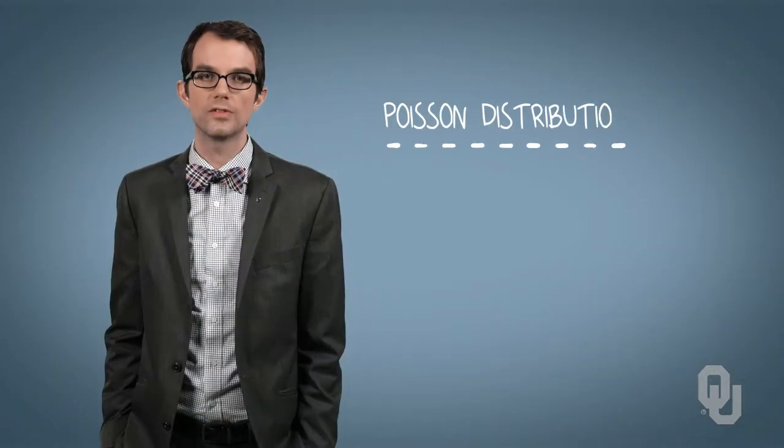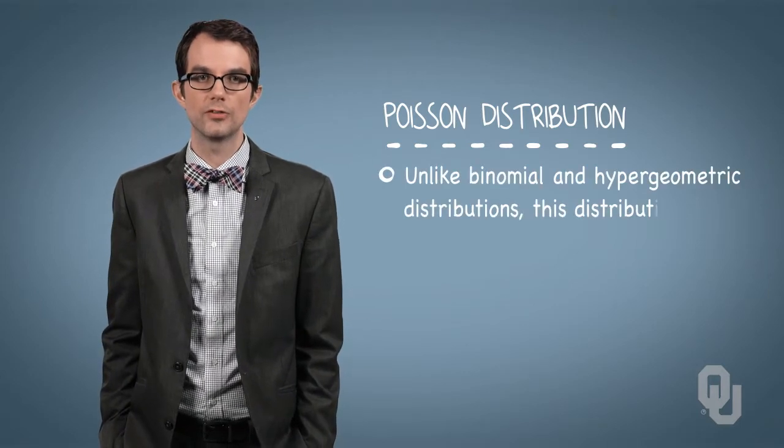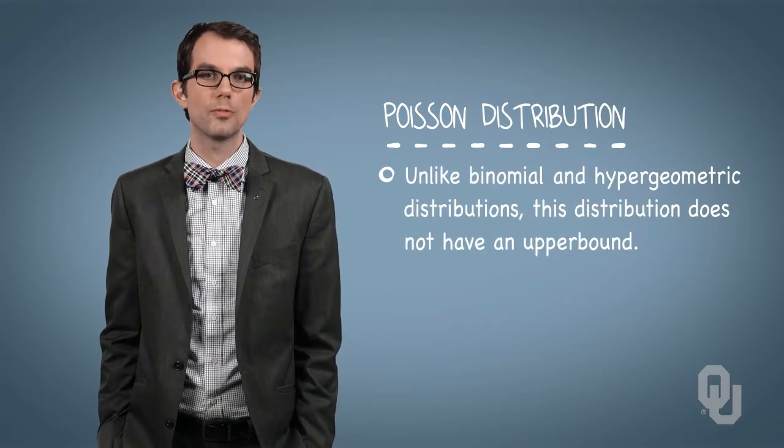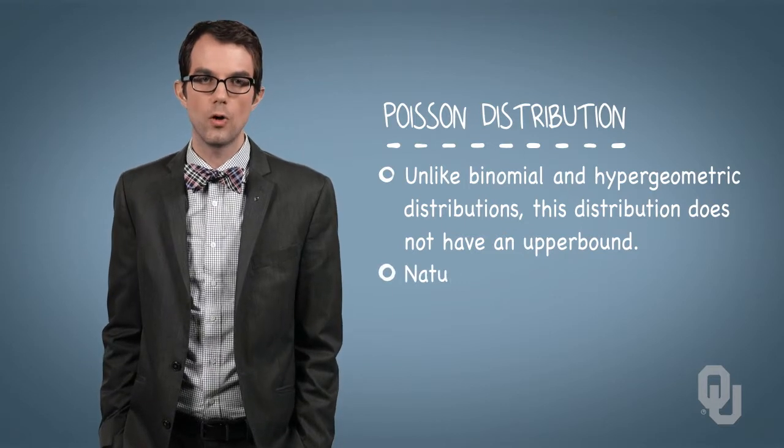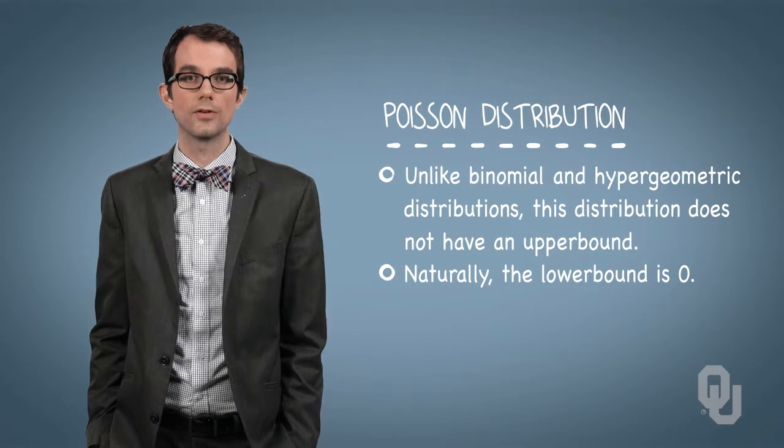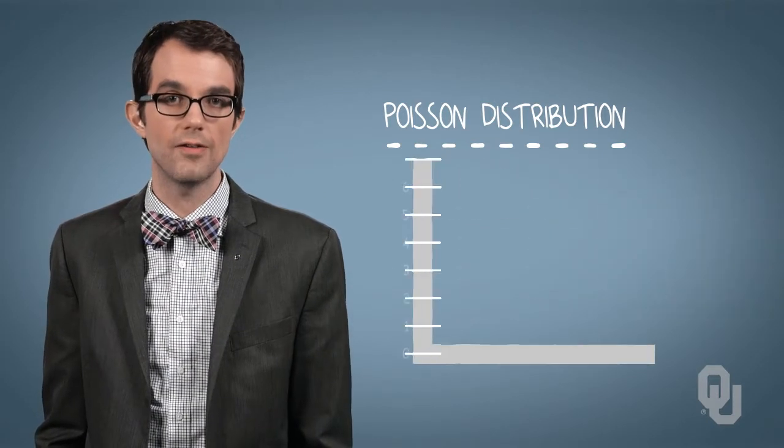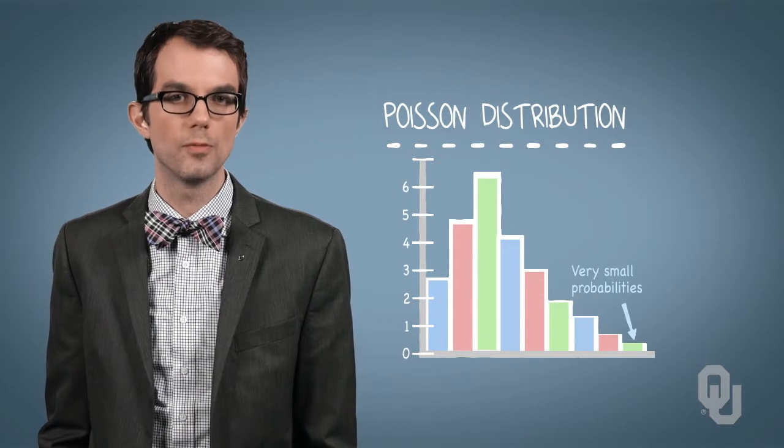A couple things to note about the Poisson distribution. It differs from the binomial and hypergeometric distributions in that it doesn't have an upper bound. Naturally, the lower bound is zero, like the other distributions, as we can't have a negative count of occurrences. But here, the count of observations extends indefinitely, though with very small probabilities.